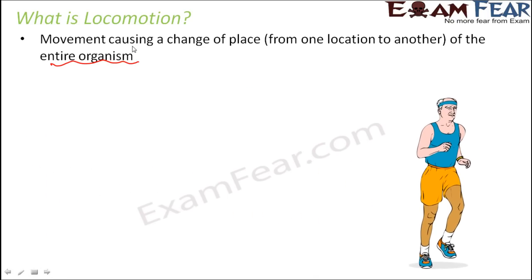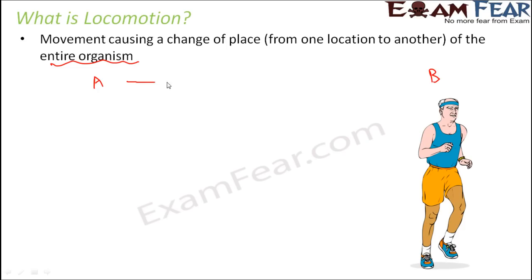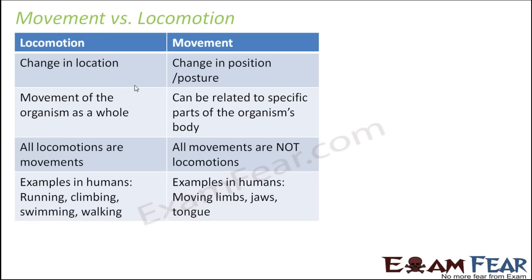A person moving from point A to point B is changing position from one place to another — that is an example of locomotion. When we talk about locomotion, it is a change in location — the entire organism moves from one place to another. But movement is a change in position — you might be at the same location but some body parts are moving. Locomotion is movement of the organism as a whole. When an entire bird moves from one place to another, that is locomotion. But movement refers to specific parts of the body moving — the wings, the legs, the neck — those are all examples of movement.